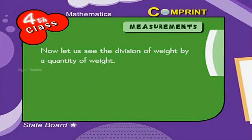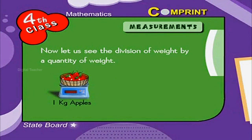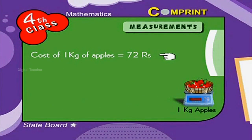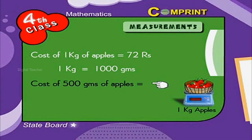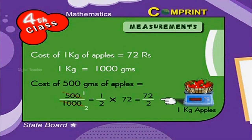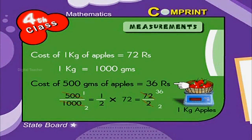Now let us see the division of weight by a quantity of weight. Example: 1 kilogram of apples costs 72 rupees. What is the cost of 500 grams of apples? Cost of 1 kg equals 72 rupees. 1 kg equals 1000 grams. Cost of 500 grams is 500 divided by 1000, which equals one half. So one half of 72 equals 72 divided by 2, which equals 36 rupees. Therefore, the cost of 500 grams of apples is 36 rupees.